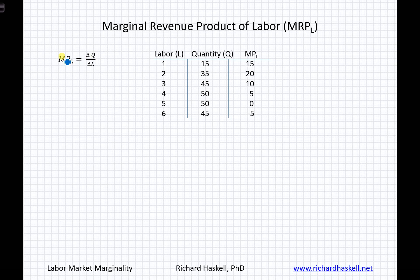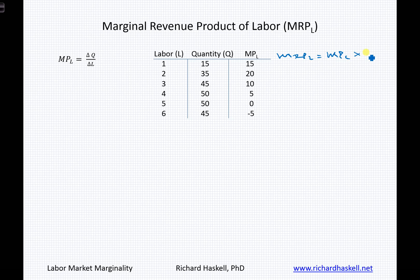We begin with our equation on marginal product of labor — marginal product of labor being equal to a change in quantity divided by a change in labor. I've replicated the table that we put together based upon our little sandwich shop, and now we're going to think about the equation. Marginal revenue product of labor is going to be equal to the marginal product of labor times the price of the output good.